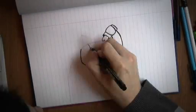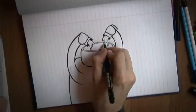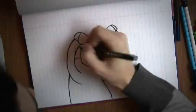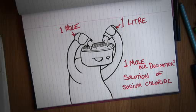Say, for example, one mole of table salt or sodium chloride has a mass of 58.5 grams. If you dissolve that in a litre of water, you've got yourself a one mole per decimetre cubed solution of sodium chloride.